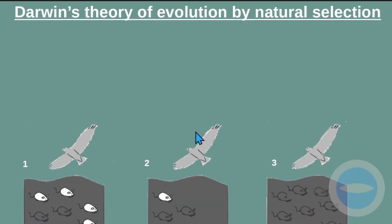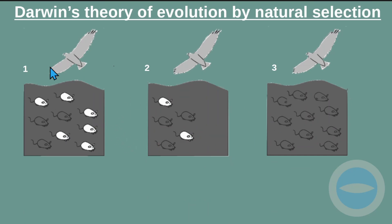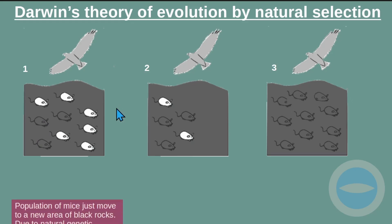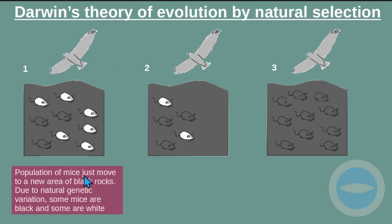The organisms that survive will reproduce and pass on their favorable characteristics to their offspring. The next generation will therefore have a higher proportion of individuals with those favorable characteristics. To explain this simply: imagine a population of mice that moves to a new area of black rocks. Due to natural genetic variation, some mice are black and some are white.